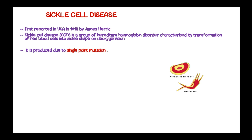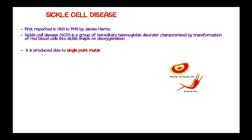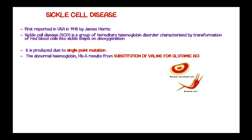Sickle cell disease is produced due to a single-point mutation. The abnormal hemoglobin, known as hemoglobin S, results from substitution of valine for glutamic acid at the sixth position of the beta chain.